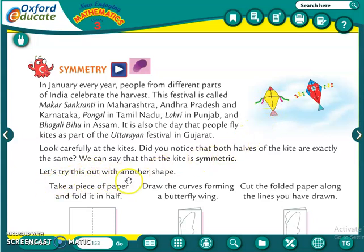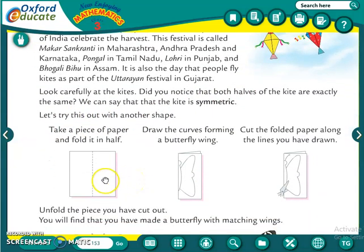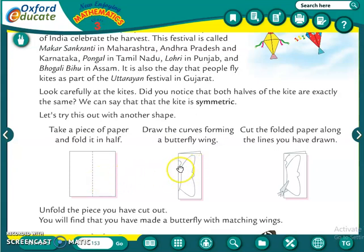Let us try this out with another shape. We will see more about symmetry. Take a piece of paper and fold it in half. Then draw the curves forming a butterfly wing - you can draw this quite easily, it is not hard. Afterwards, cut the folded paper along the lines you have drawn. You have to cut the paper right along those lines.